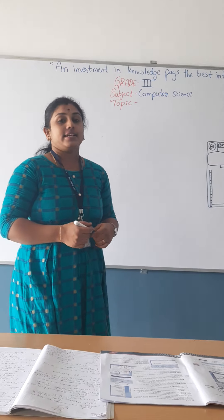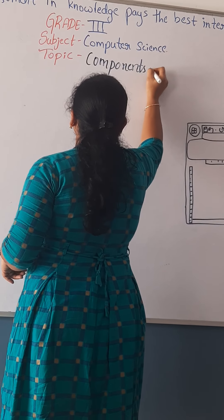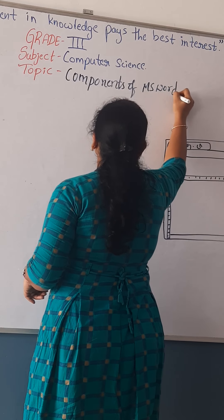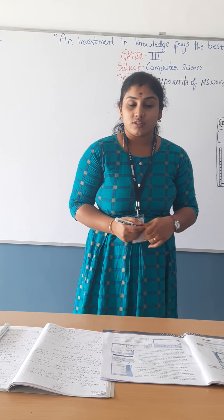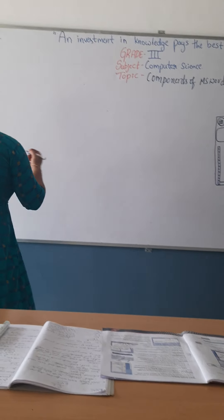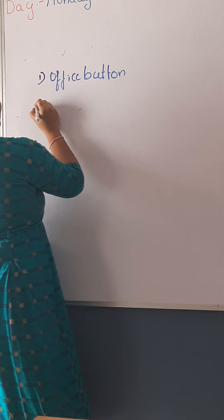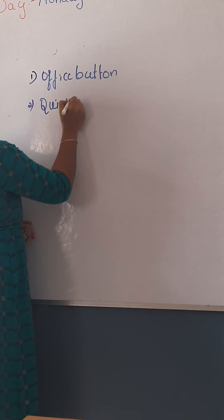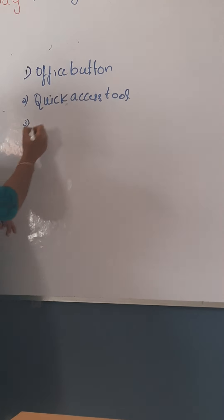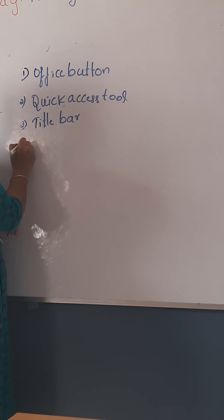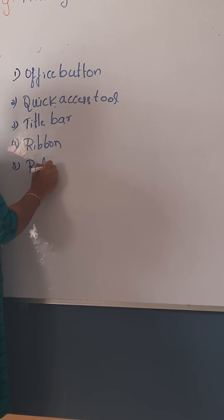Today's topic is components of MS Word. Before going for practical, let's recall what components are there in MS Word. The first component is the Office Button. Next, you will have the Quick Access Toolbar. Followed by the Title Bar. Then you will have the Ribbon. Then you will be having the Ruler.